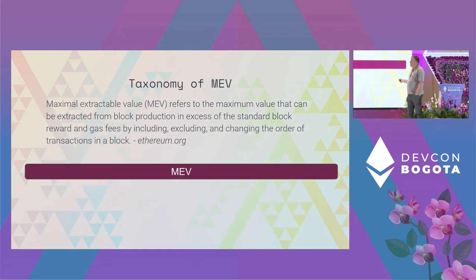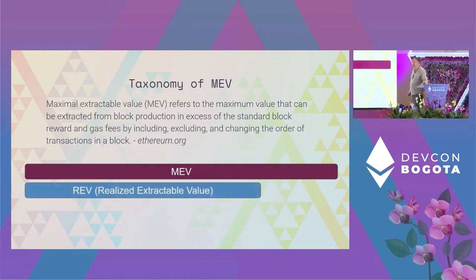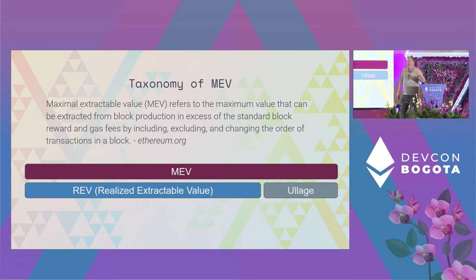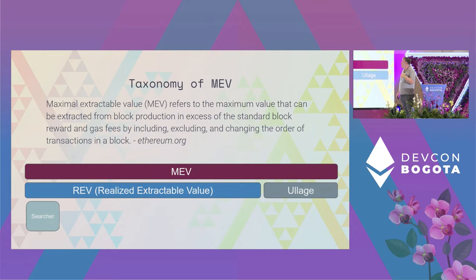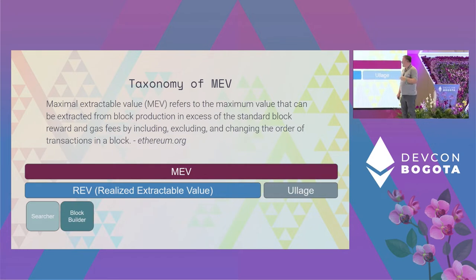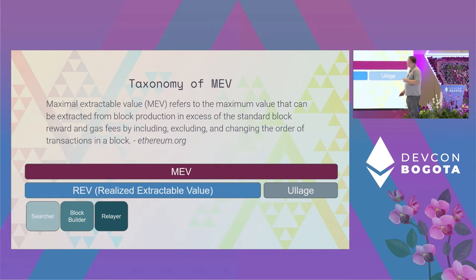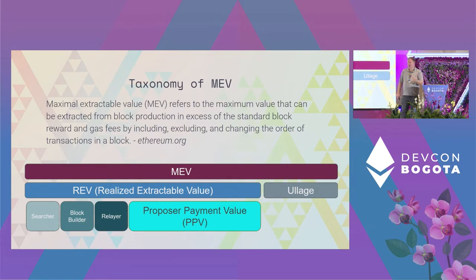MEV — maximum extractable value — is viewed somewhat as a theoretical limit. I would argue, and a lot of the data supports, that we're not actually extracting the full amount. The Flashbots team uses the term REV — the actual amount extracted from the block. There's some earnings left on the blockchain for the next block; I'm calling that 'ullage' until someone comes up with a better name. Post-merge metrics show how much REV goes to the searcher, to the block builder, and what part may go to the relayer — though relayers seem to be providing that as a no-fee service. Most of it is going to the block proposer — that's the validator.